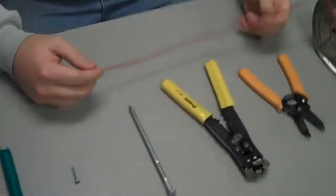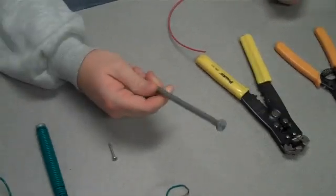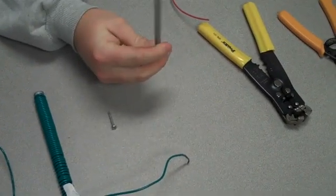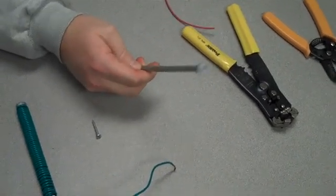In this demonstration we will be showing you how to make an electromagnet. What you'll need is a piece of conductive metal. This can be iron or something that can be magnetic.